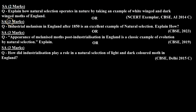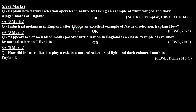The next type is a short answer type question of three marks, which was asked in the CBSE board 2023. The question is: industrial melanism in England after 1850 is an excellent example of natural selection — explain how.